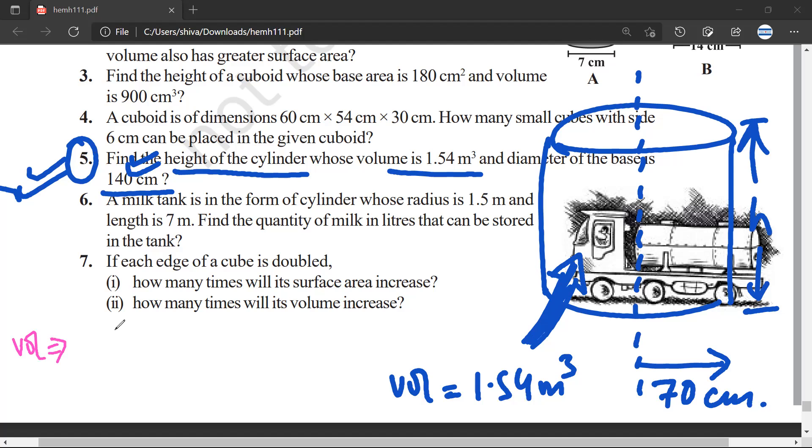Yeah, what is the volume of cylinder? Pi r square h. Okay, 1.54. We are given the diameter of the base, so the radius would be 70 centimeter. So I have this, I can write this as 22 upon 7 into...